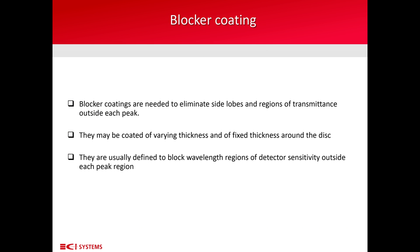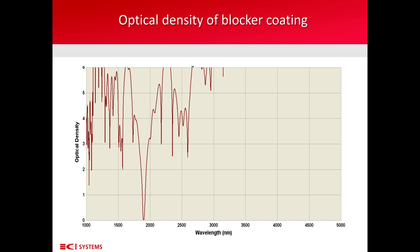Blocker coatings are usually needed to eliminate side lobes and regions of transmittance outside each peak. They may be coated of varying thickness and fixed thickness around the disk, and are usually defined to block wavelength regions of detector sensitivity outside each peak region.